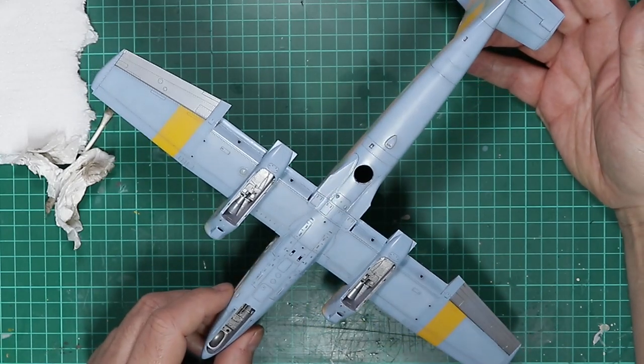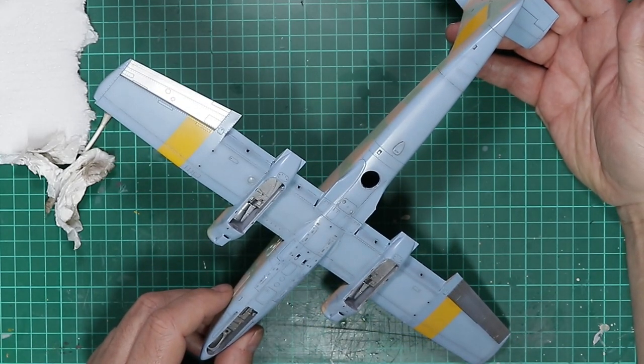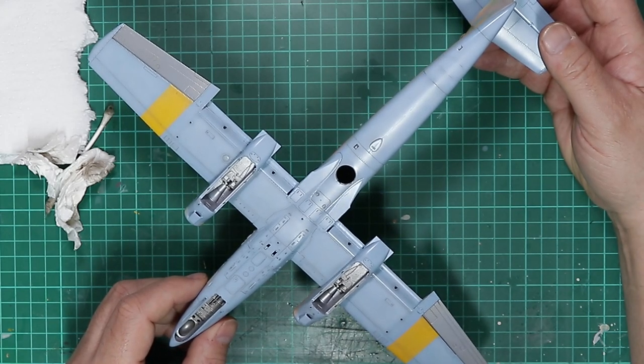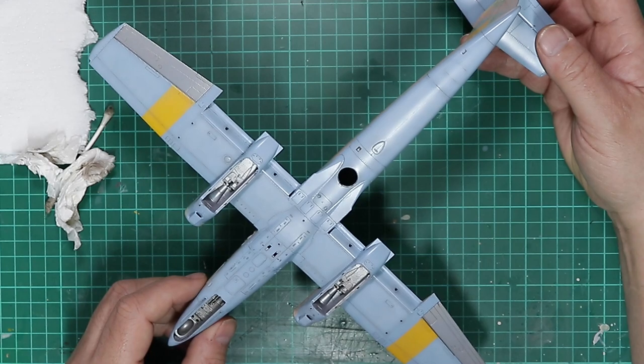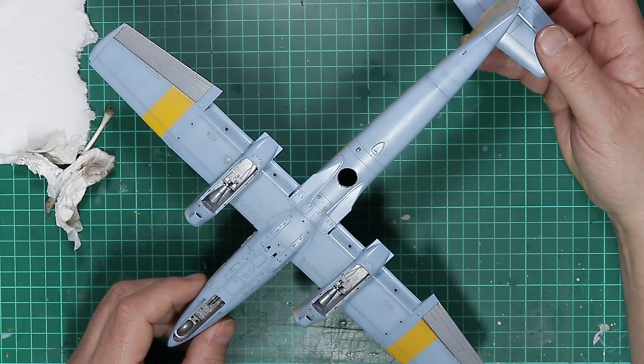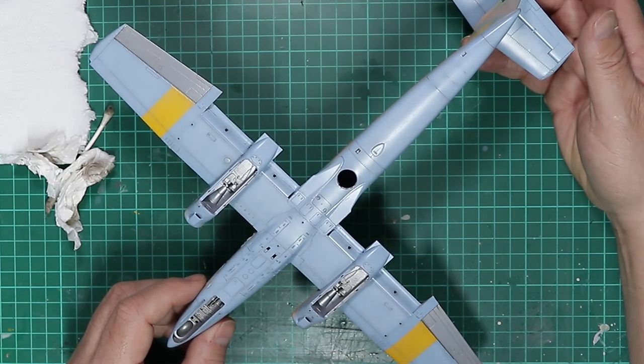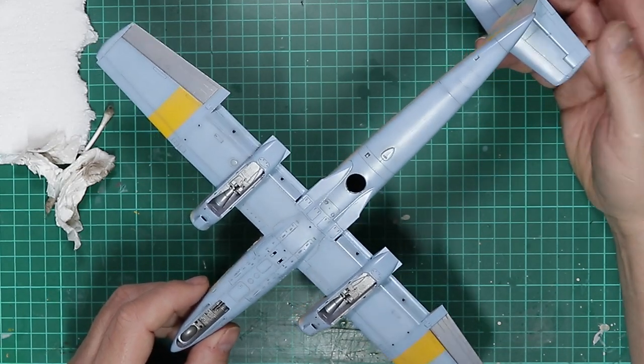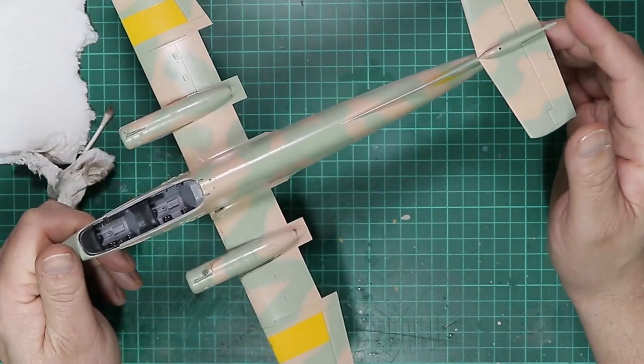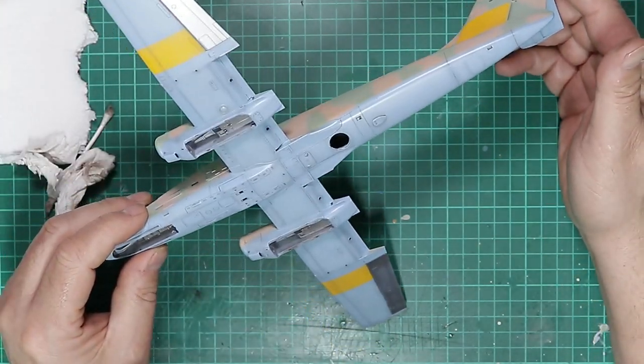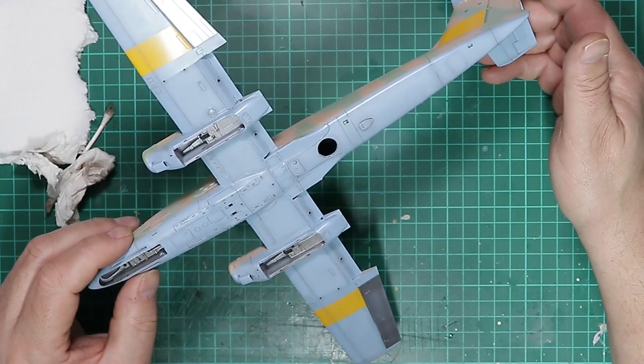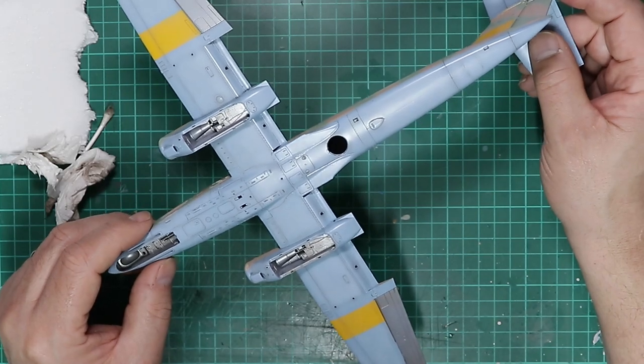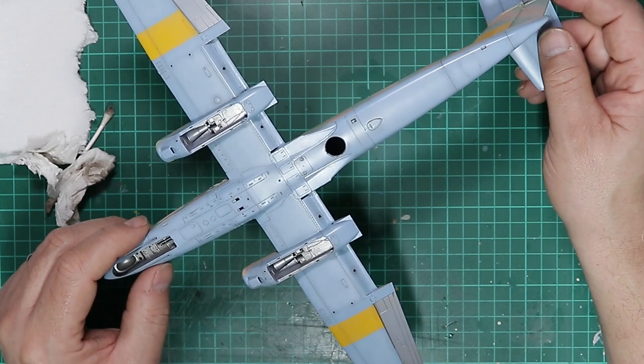So that concludes part 5 of Kinetic's 1/48th scale Pekara build. In part 6 we'll look at getting some of these smaller details on along with the decals hopefully. I shall work on the upper sides in the same manner as you've seen me work on the lower surfaces in preparation for part 6. So join me then, please look after yourselves and take care until next time.